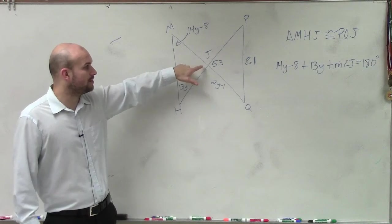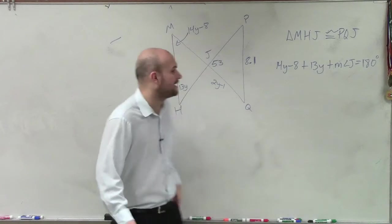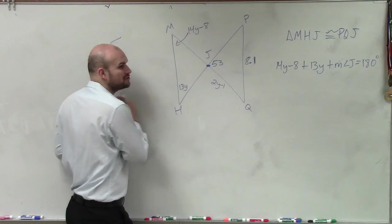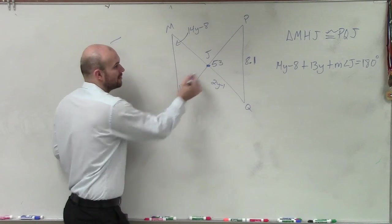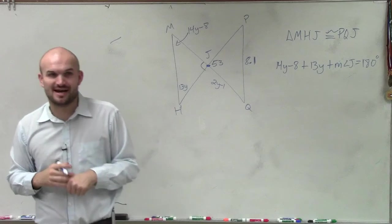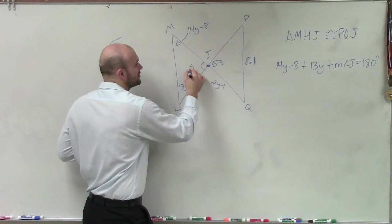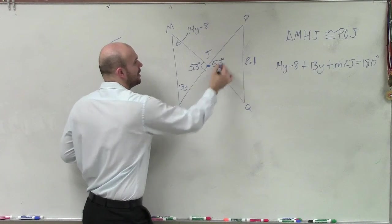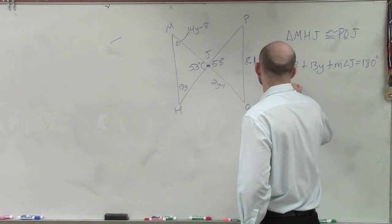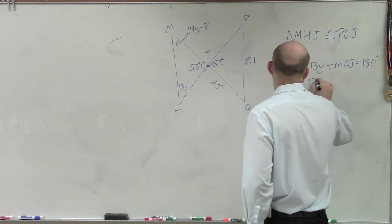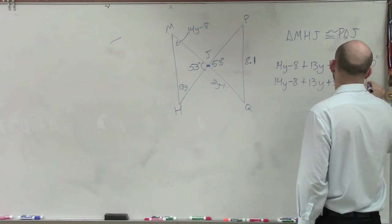Now I have two variables. I have y and I have the measure of J. But what I notice is I have two lines that intersect that create two angles that do not share a side but share a vertex. And we call those vertical angles. So therefore, vertical angles, if you guys remember, are equal in measure. They're congruent.